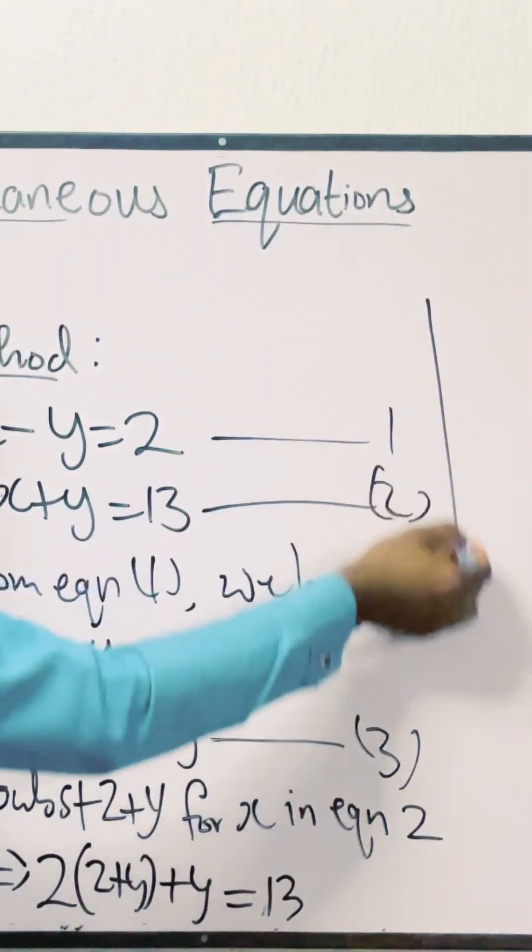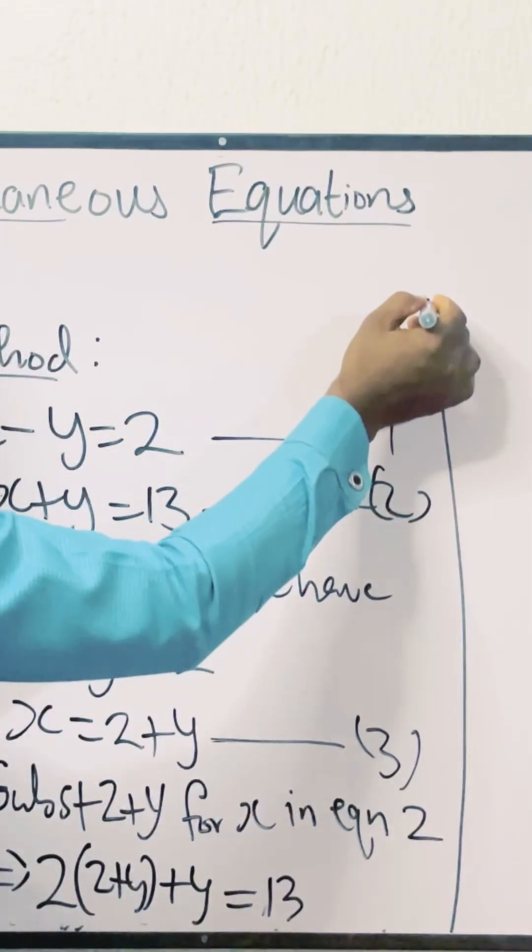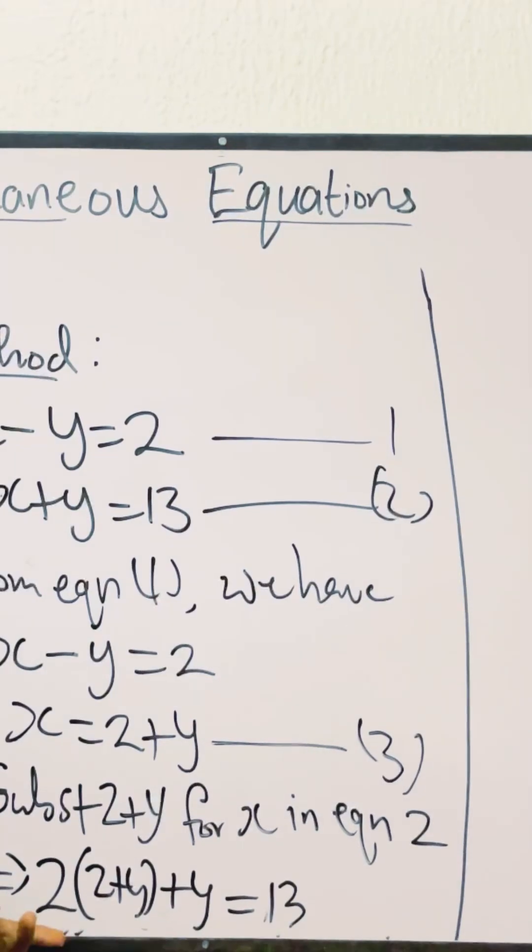My board is full, so let me just manage this one. So we have 2(2 plus y) plus y equals 13.